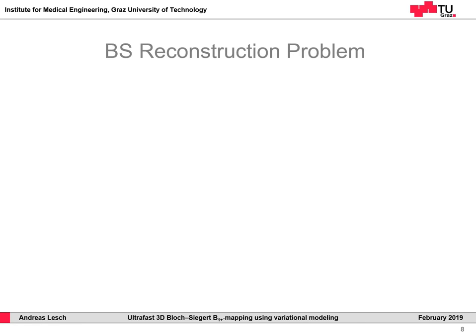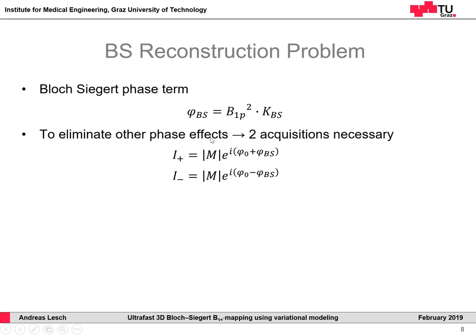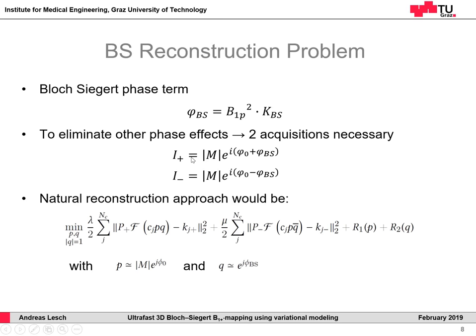Now let's set up the Bloch-Siegert reconstruction problem. We already know that the Bloch-Siegert phase is proportional to the squared B1 peak magnitude. To get rid of other phase effects, two acquisitions are necessary: one with positive and one with negative resonance offset. In the fully sampled case, the Bloch-Siegert phase can be easily obtained by a complex division of these two acquisitions. In the undersampled case, we have to set up an optimization problem consisting of two data fidelity terms, one for each resonance offset acquisition.